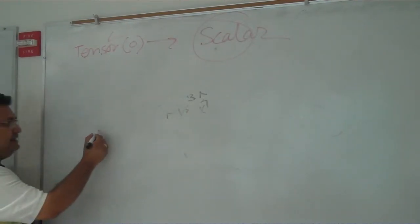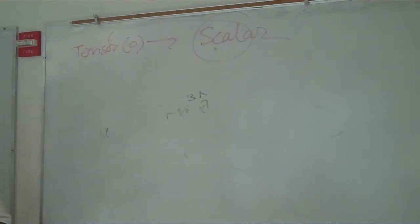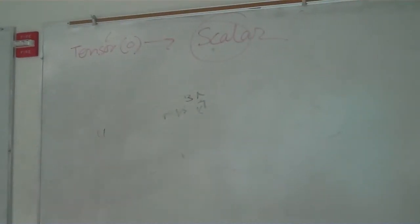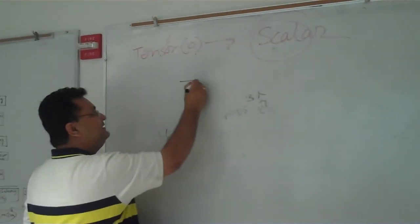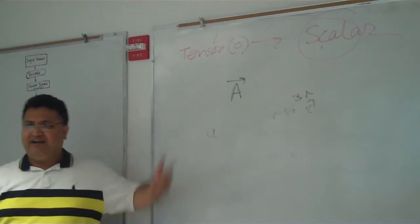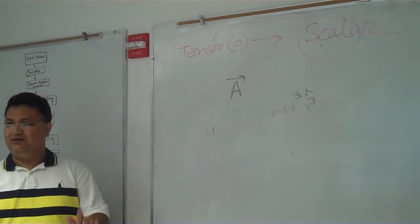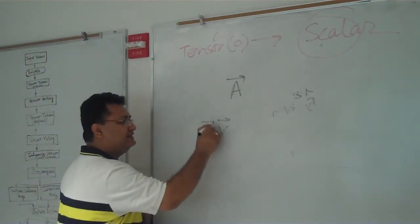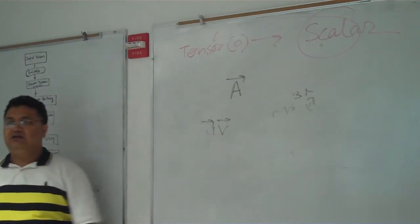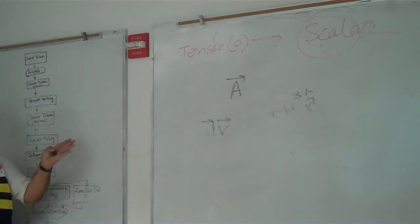Look, the thing is that, for example, if I ask you what is A? The answer will be vector. Yes or no? If I say what is this? There is no dot here. What you will say? This is a dyad. Dyad means tensor of rank 2.